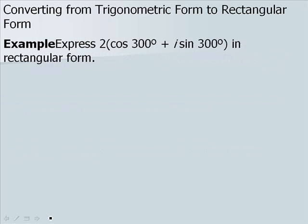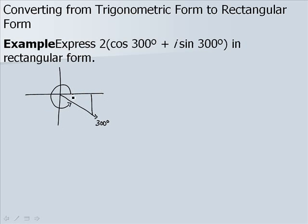Let's look at the following example. We want to express 2 times the quantity cosine of 300 degrees plus i sine of 300 degrees in rectangular form. First we need to evaluate the cosine and sine of 300 degrees. Looking at our coordinate plane, 300 degrees will be in quadrant 4. We draw our reference angle, which will be 360 minus 300, or 60 degrees. Our triangle values will be square root of 3 over 2 — negative in this case — one half, and 1.